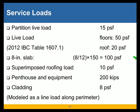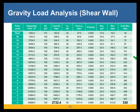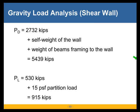The building is subjected to the service loads as presented on this slide, and we will reduce the uniform live load according to 2012 IBC section 1607. This table shows the effects of uniform dead and uniform live loads for the shear wall. To get the final effects of the gravity loads for the shear wall, we need to add the self-weight of the wall as well as the weight of beams framing to the wall to the PD values from the table, and the effects of non-reducible partition loads to the PL value.